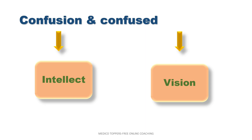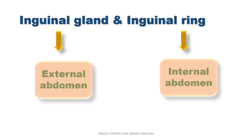Next, inguinal gland and inguinal ring. We might think that gland should be present inside the body, but here the ring is in internal abdomen while gland is in external abdomen. Inguinal ring — R-I-N-G — I for I: you can remember it like this — I for I, ring is in internal abdomen.